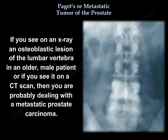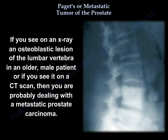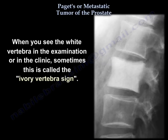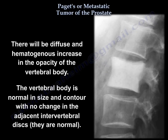If you see on an x-ray an osteoblastic lesion of the lumbar vertebra in an older male patient, or if you see that on a CT scan, you are probably dealing with a metastatic prostate carcinoma. When you see the white vertebra in the examination or in the clinic, sometimes it's called the ivory vertebra sign. There will be a diffuse and homogenous increase in the opacity of the vertebral body. The vertebral body is normal in size and contour, with no changes in the adjacent intervertebral discs — the intervertebral discs are normal.